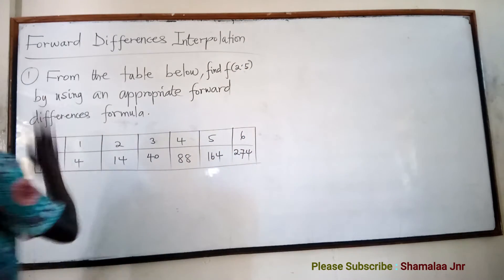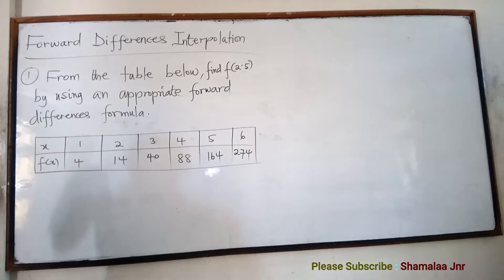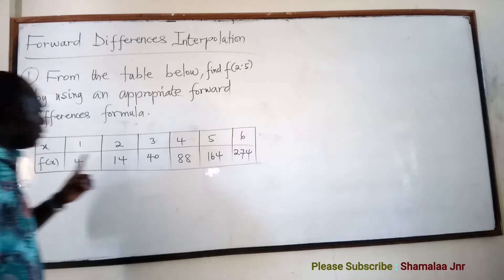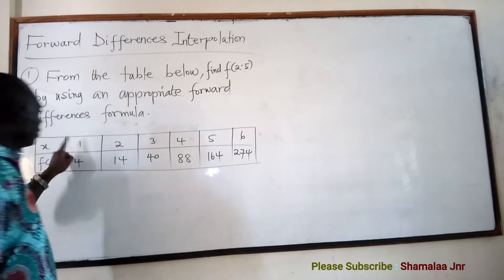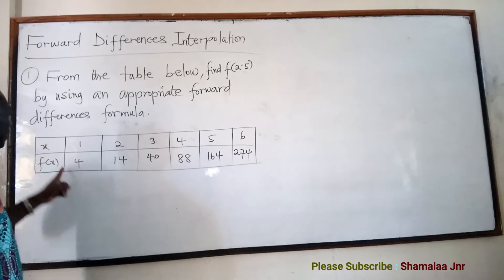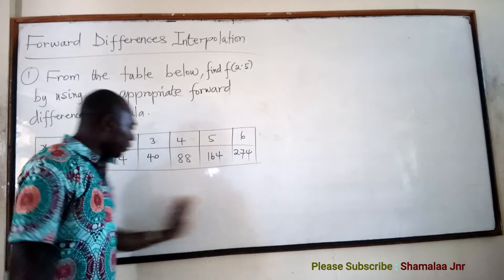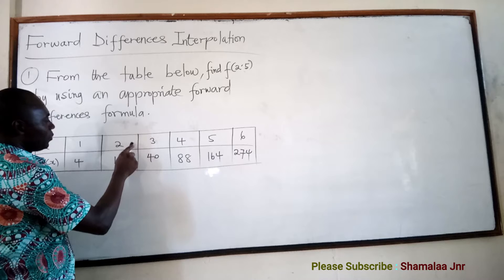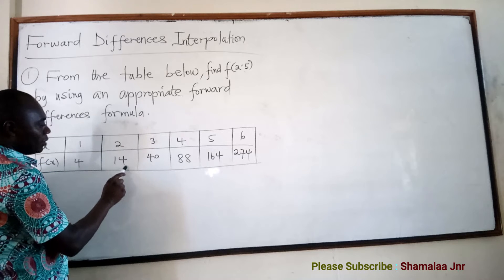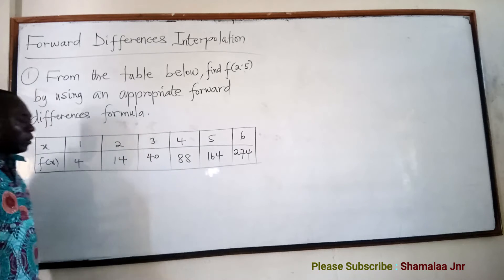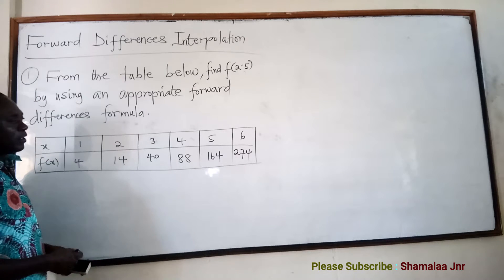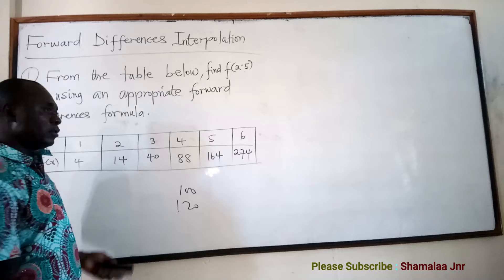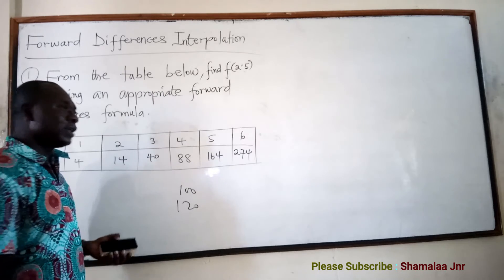The question is: for the table below, find f(2.5) by using the appropriate forward differences formula. The x values are one, two, three, four, five, six, with corresponding functional values. Before you start solving, you should know where the answer should lie. 2.5 is somewhere between 2 and 3, so we expect the answer to be between 14 and 40. If you get say 100 or 120, that means the question has not been solved correctly.